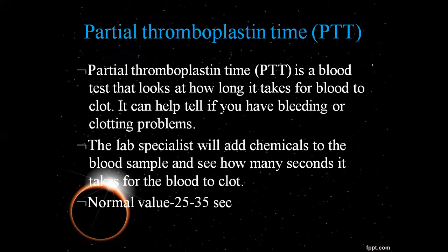Partial thromboplastin time, or PTT, is also a blood test that looks at how long it takes for blood to clot. It can help tell if you have bleeding or clotting problems. Lab specialists add chemicals to the blood and measure how many seconds it takes for the blood to clot. The normal value is 25 to 30 seconds.